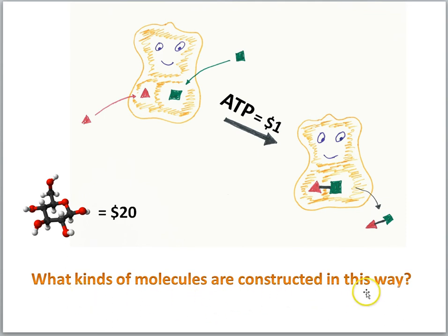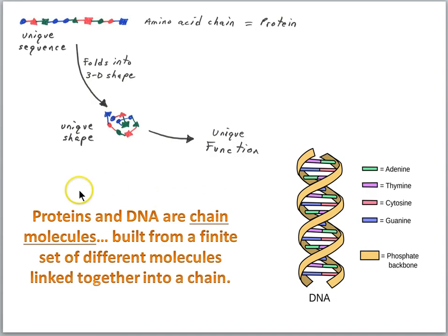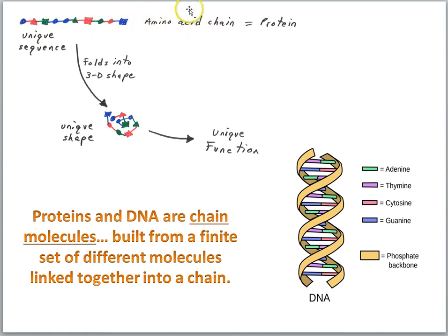What kinds of molecules are constructed by these teams of proteins? Very important molecules like proteins themselves and DNA are chain molecules built from a finite set of different molecules linked together into a chain. Proteins are composed of a chain of molecules called amino acids — these are some of the basic nutrients we get in food when we eat protein. There are 20 different kinds of amino acids. A protein is really just a chain molecule composed of these amino acid units, and this long chain will fold up into a shape that determines the function of the protein.